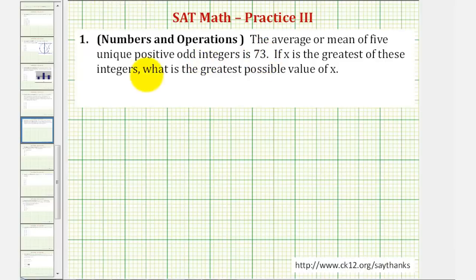Let's start by listing the four smallest unique positive odd integers, which would be one, three, five, and seven. These are the smallest unique positive odd integers.